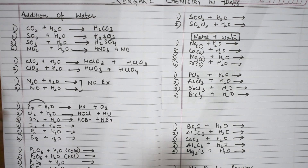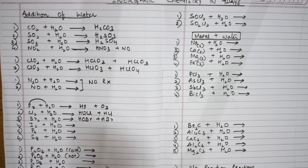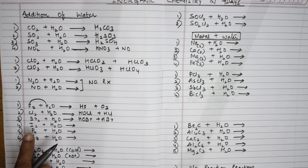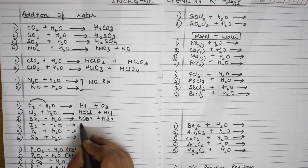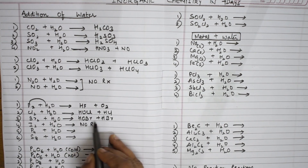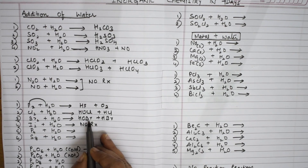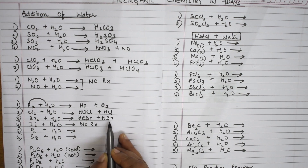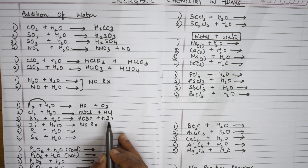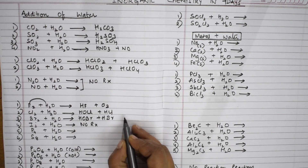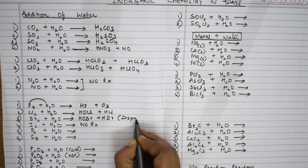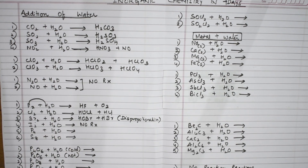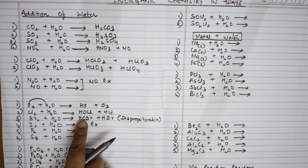For iodine plus water, there is no reaction — remember this. In the bromine plus water reaction, bromine is in the +1 state in HOBr and the −1 state in HBr. This type of reaction is called a disproportionation reaction, where bromine undergoes both oxidation and reduction.